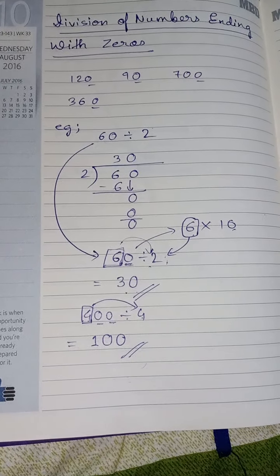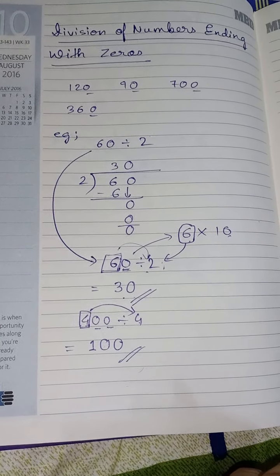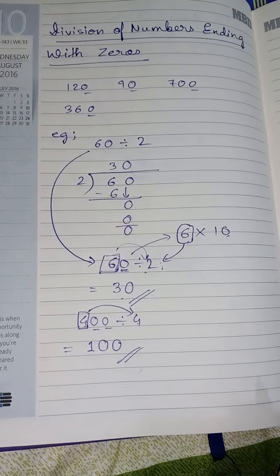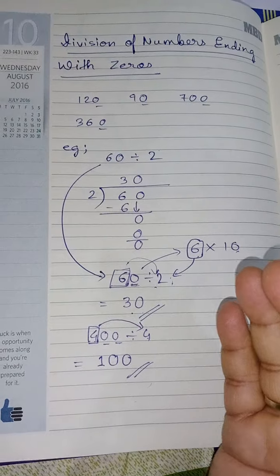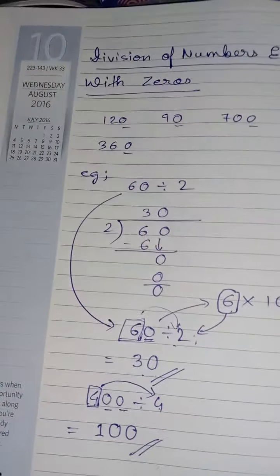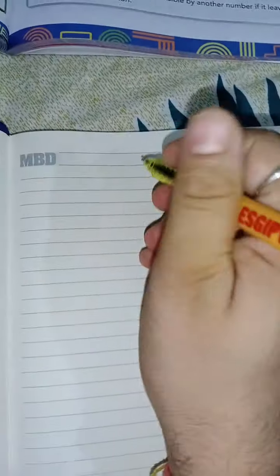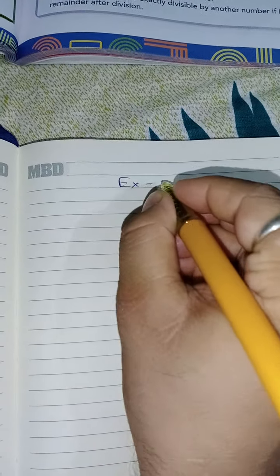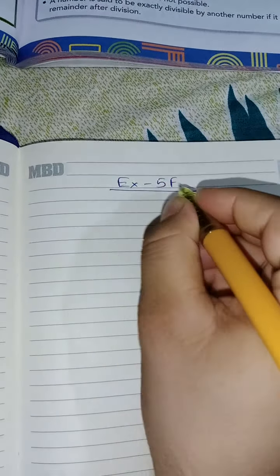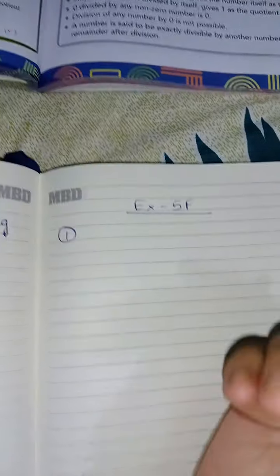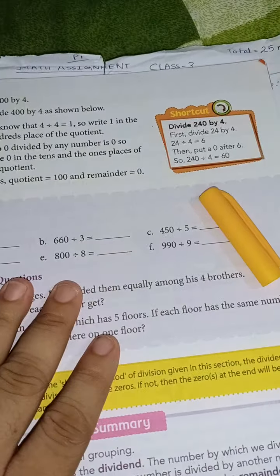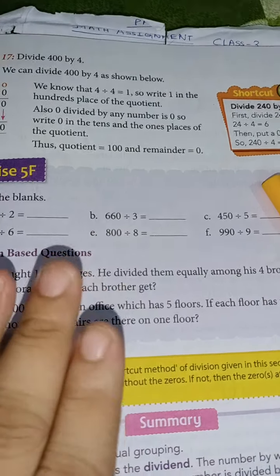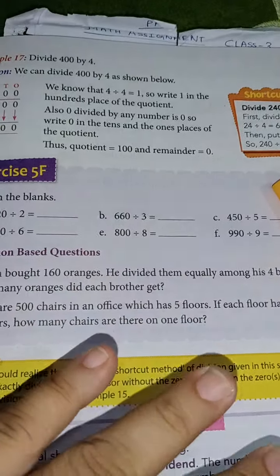So as you can see, dividing a number having zero at the end unit place, it becomes quite easier. So based on this explanation, let us now come to exercise 5F where the first question is fill in the blanks. These are some fill in the blanks given here. I'm not going to do all of them. I'll do some of them for you and the rest you will do yourself.